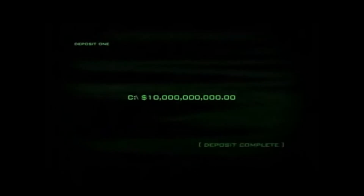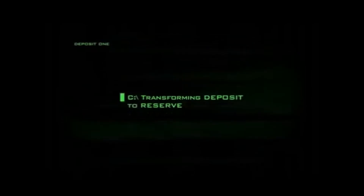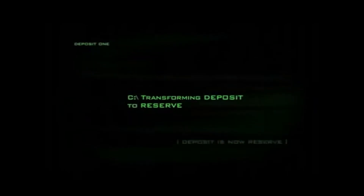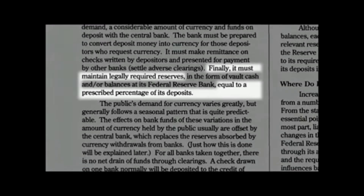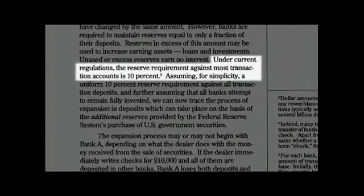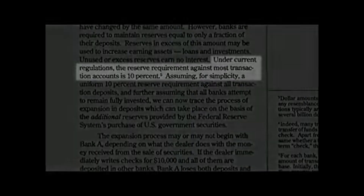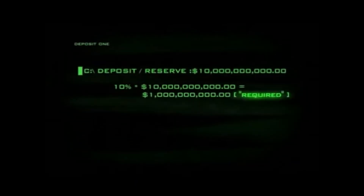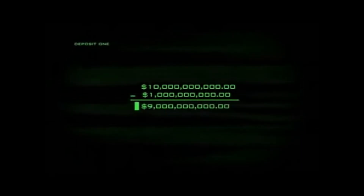So the exchange has been made and now $10 billion sits in a commercial bank account. Here is where it gets really interesting. For as based on the fractional reserve practice, that $10 billion deposit instantly becomes part of the bank's reserves, just as all deposits do. As stated in Modern Money Mechanics, a bank must maintain legally required reserves equal to a prescribed percentage of its deposits. Under current regulations, the reserve requirement against most transaction accounts is 10%. This means that with a $10 billion deposit, 10% or $1 billion is held as the required reserve, while the other $9 billion is considered an excess reserve and can be used as the basis for new loans.